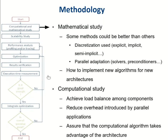You also need to know which architecture you are targeting, because if you move from a vectorial machine like Cray to something with GPUs, the model you develop will change a lot. You must think about this if you want to increase computational performance. On the computational side, you need to achieve load balance between different components and processes in domain decomposition, and reduce the overhead introduced by parallel application.